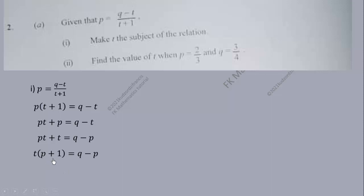We can now divide through by p plus one. Hence the first part will give us t is equal to q minus p over p plus one. Now we have to find the value of t when p equals 2 over 3 and q equals 3 over 4.